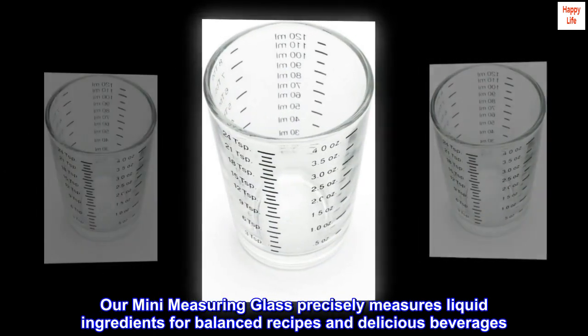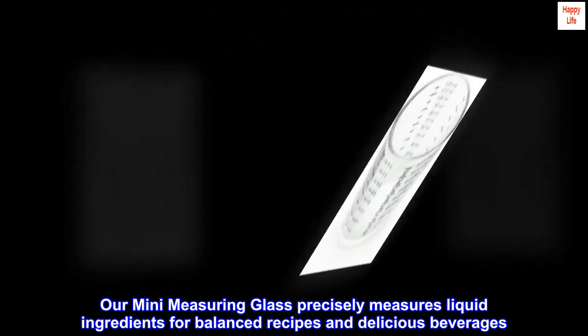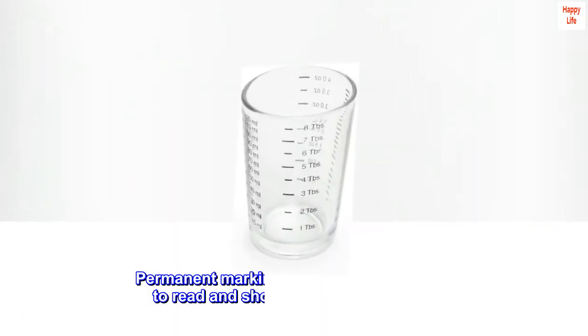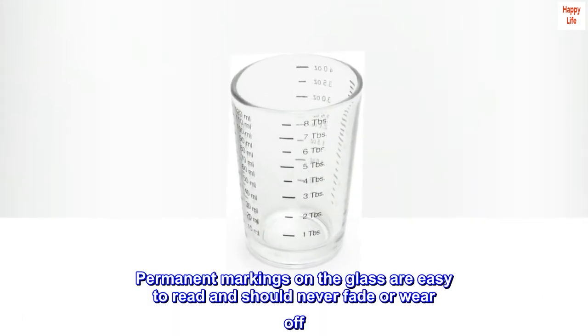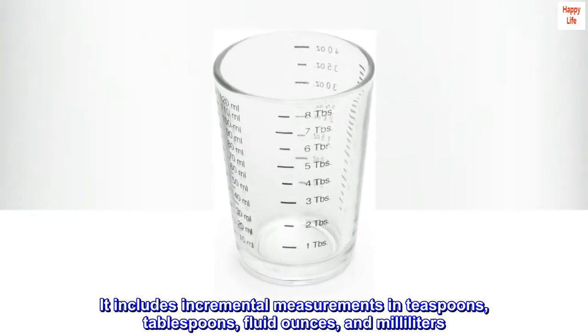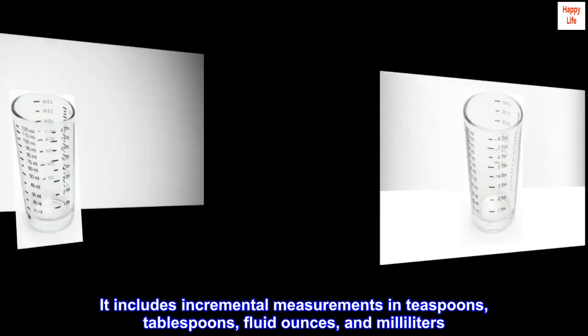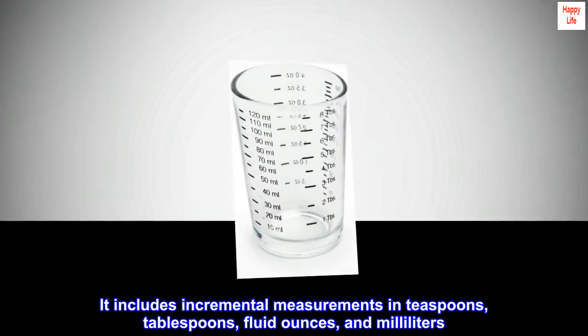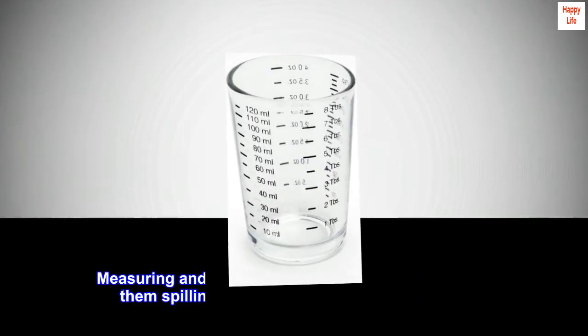Permanent markings on the glass are easy to read and should never fade or wear off. It includes incremental measurements in teaspoons, tablespoons, fluid ounces, and milliliters. Measuring and transporting smaller amounts without them spilling is easier with this glass than with measuring spoons.